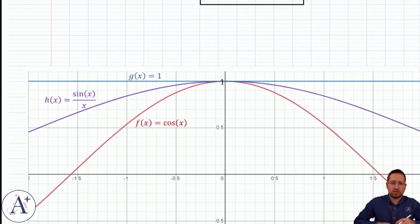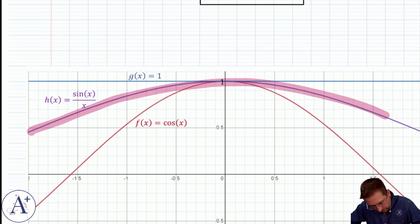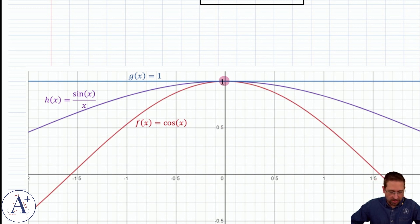If we want to visualize this to be convinced, here we have the different graphs. This is cos(x), this is g(x) = 1, and of course h is stuck in between the two, and therefore has no choice but to go through this point right here as x approaches 0. Therefore the limit of sin(x)/x as x approaches 0 is equal to 1.